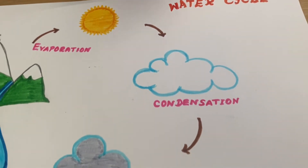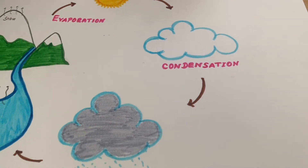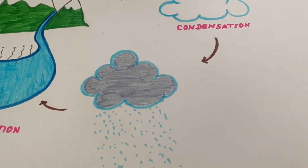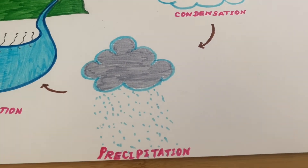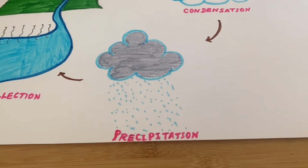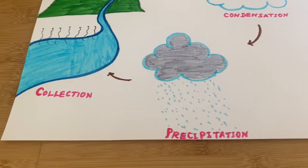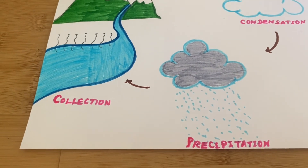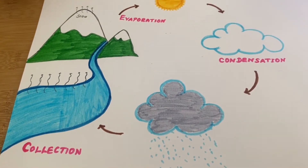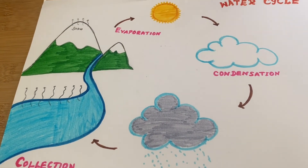Then, the rain lands on rivers, lakes, seas, and oceans, and that is called collection.